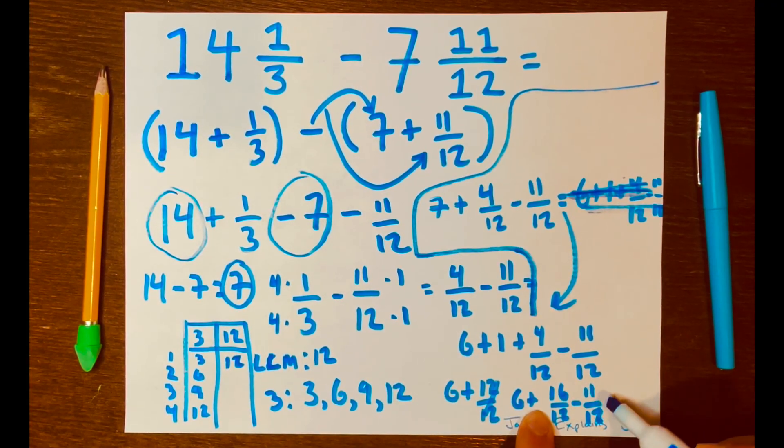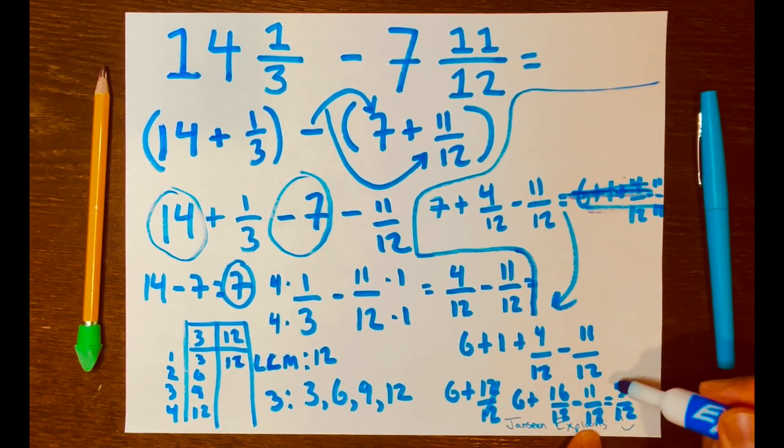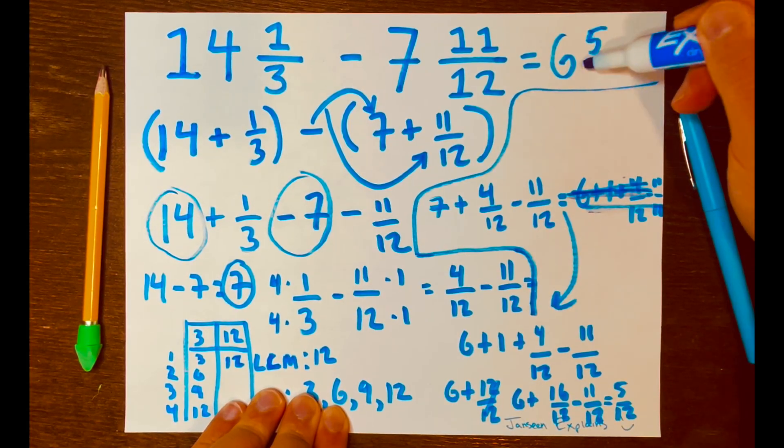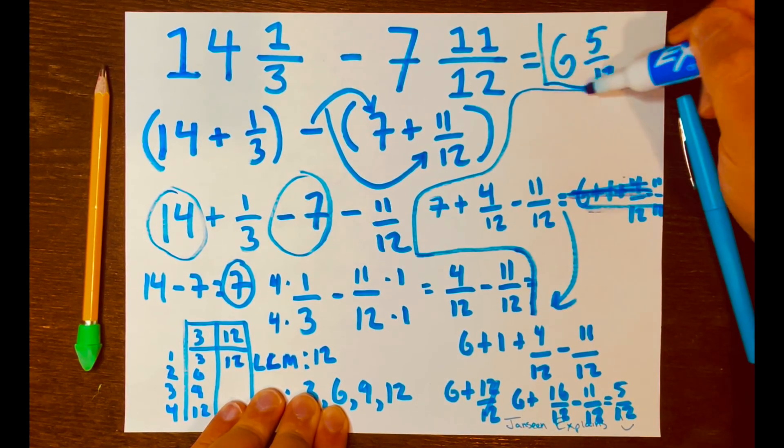So, 16 minus 11 is 5 over 12. And, so, our answer is 6, 5 over 12. And, there you go.